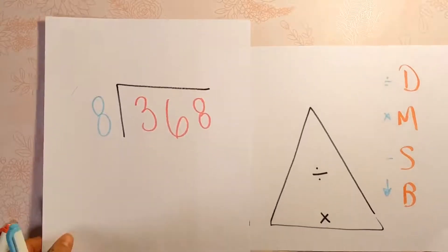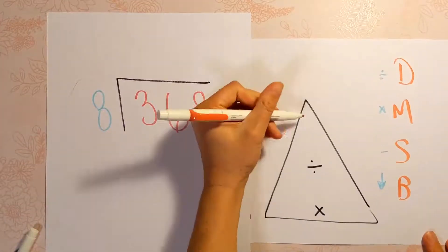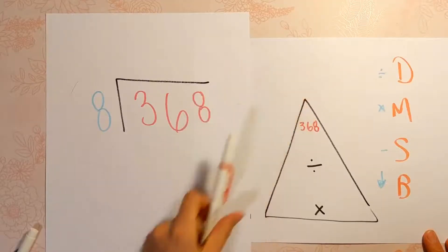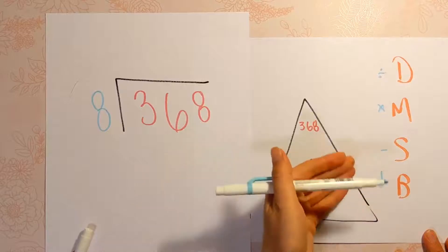Hello, today we are going to do 368 divided by 8. So make sure you draw a fact triangle, please, so that you can see how these numbers relate to each other, meaning we're doing 368 divided by 8, but we're also thinking about 8 times what equals 368.